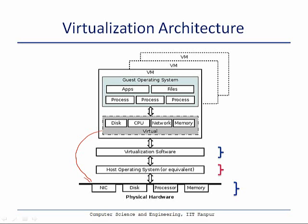The virtualization layer may be part of your operating system, or it could be a separate piece of software installed on an existing native operating system such as Linux or Windows. On top of these virtual resources, users can install a regular operating system, run regular applications, have files, and so on. You can have multiple virtual machines running on the same physical hardware.